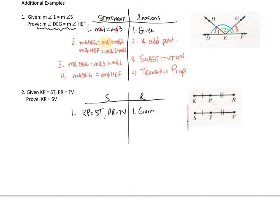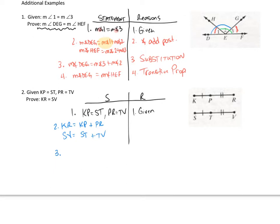We need to prove that KR equals SV. What is KR made up of? KR is made up of KP plus PR. And SV is made up of ST plus TV. But look what I know — KP equals ST and PR equals TV. Let's make that substitution, so now I can say KR is made up of ST plus TV.